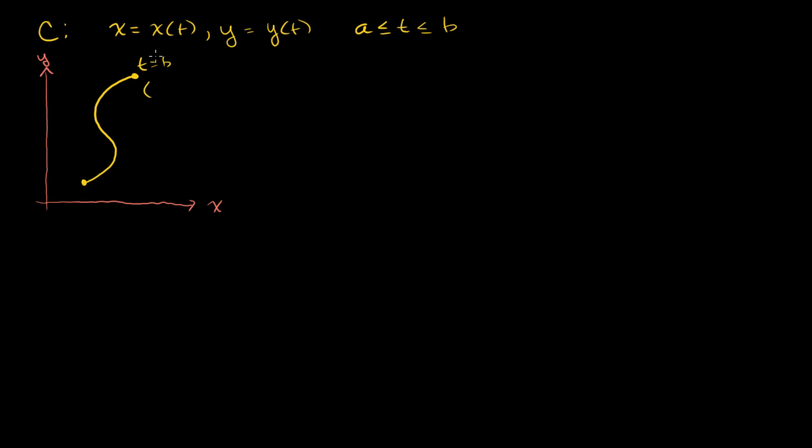This actual point right here will be x of b. That would be the x-coordinate. You evaluate this function at b. And this is, of course, when t is equal to a. The actual coordinate in R2 on the Cartesian coordinates will be x of a, which is this right here. And then y of a, which is that right there. And we've seen that before. That's just a standard way of describing a parametric equation or a curve using two parametric equations.